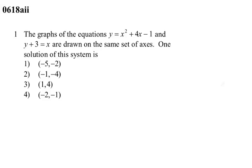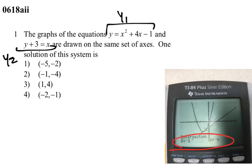Let's look at some questions from June 2018. First, we're looking at when the graphs of these two equations are drawn on the same axis, we're looking for the solution of the system. We're going to put the first one into y₁ and the other into y₂ — of course we have to solve for y. If you sketch it and find the intersection, you get negative one comma negative four, which is choice 2.